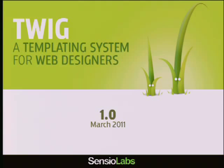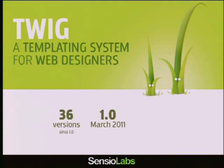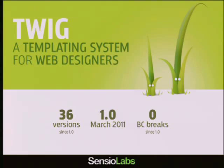Even if I was really convinced that using a templating system like Twig was a good idea, even for frameworks like Symfony, I thought it would be quite impossible to convince the PHP world. Of course, I was wrong, because three years later, Twig is used by many people. The first stable version of Twig was released in March 2011, two years after the announcement of the Twig project. We had almost 40 releases since then — 18 months and 36 releases — but zero backward compatibility breaks. That's something I'm really proud of.